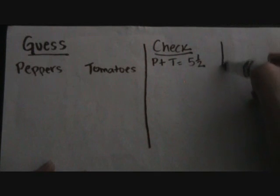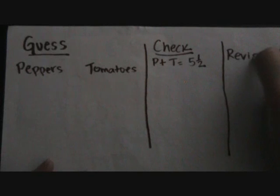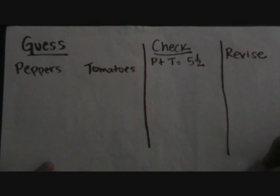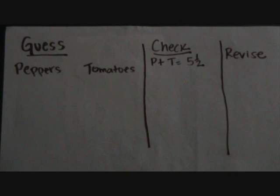After I check, if my answer is incorrect I will revise or change my answer. Now, because I know that peppers and tomatoes should both equal five and a half, I need to guess something less than five and a half. I can choose any number I would like. I am going to start with a guess that she uses one cup of peppers, so underneath peppers I will put one.